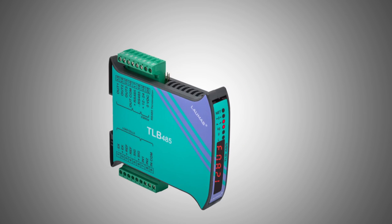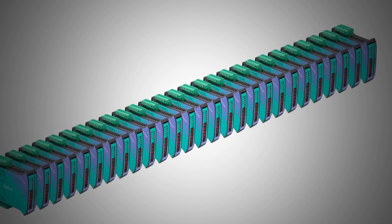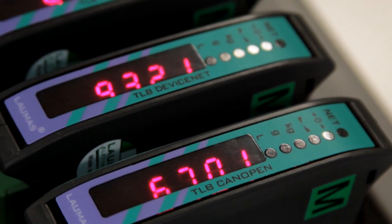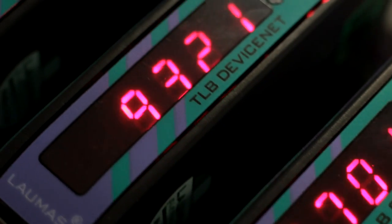With its compact space-saving design, the TLB family is ideal for back panel mounting. For a system configured with a number of scales, multiple transmitters can be mounted on a single Omega DIN rail, resulting in significant savings of space.